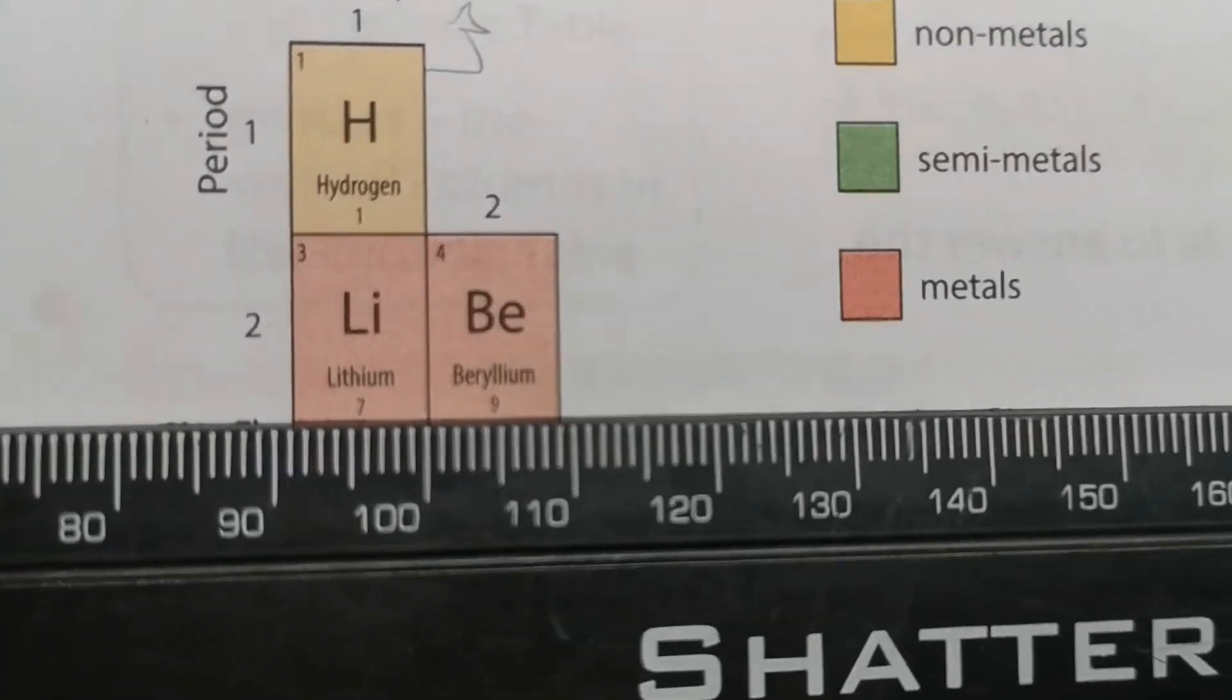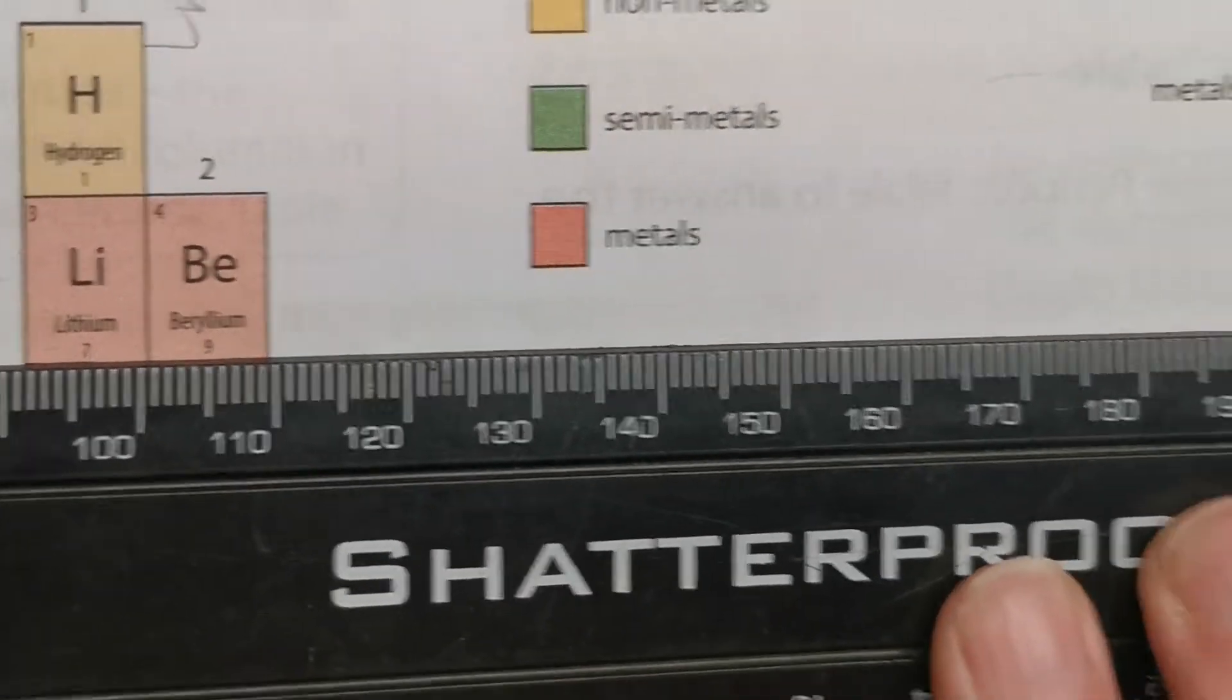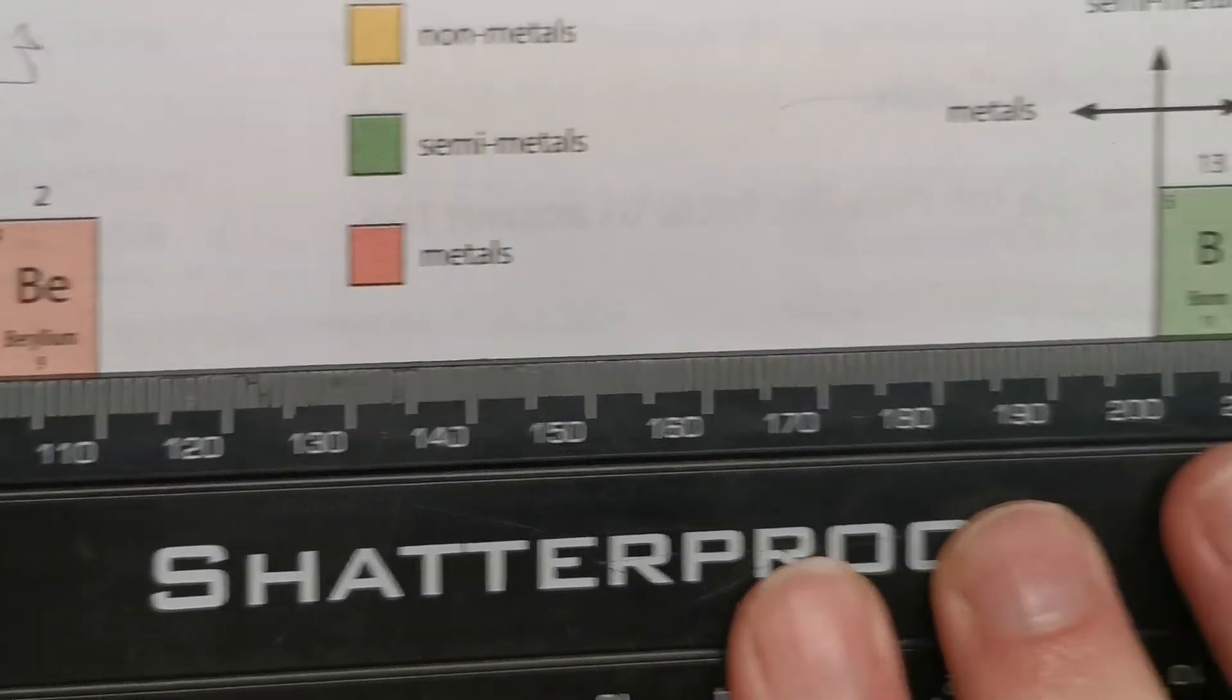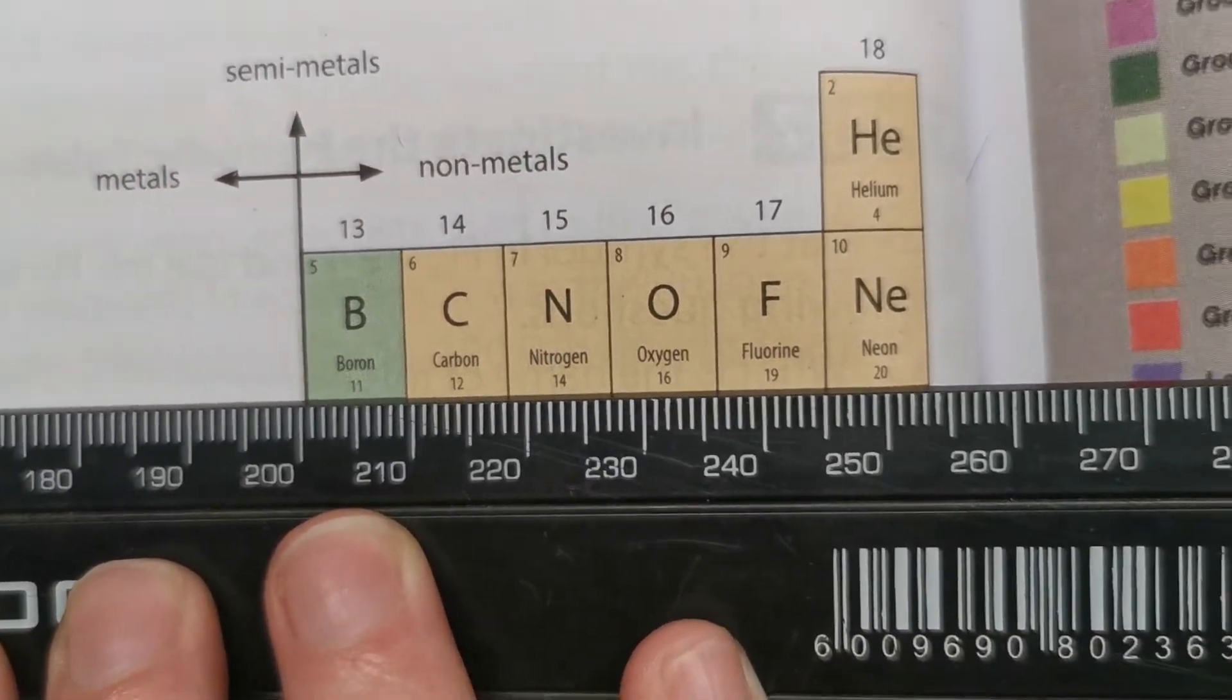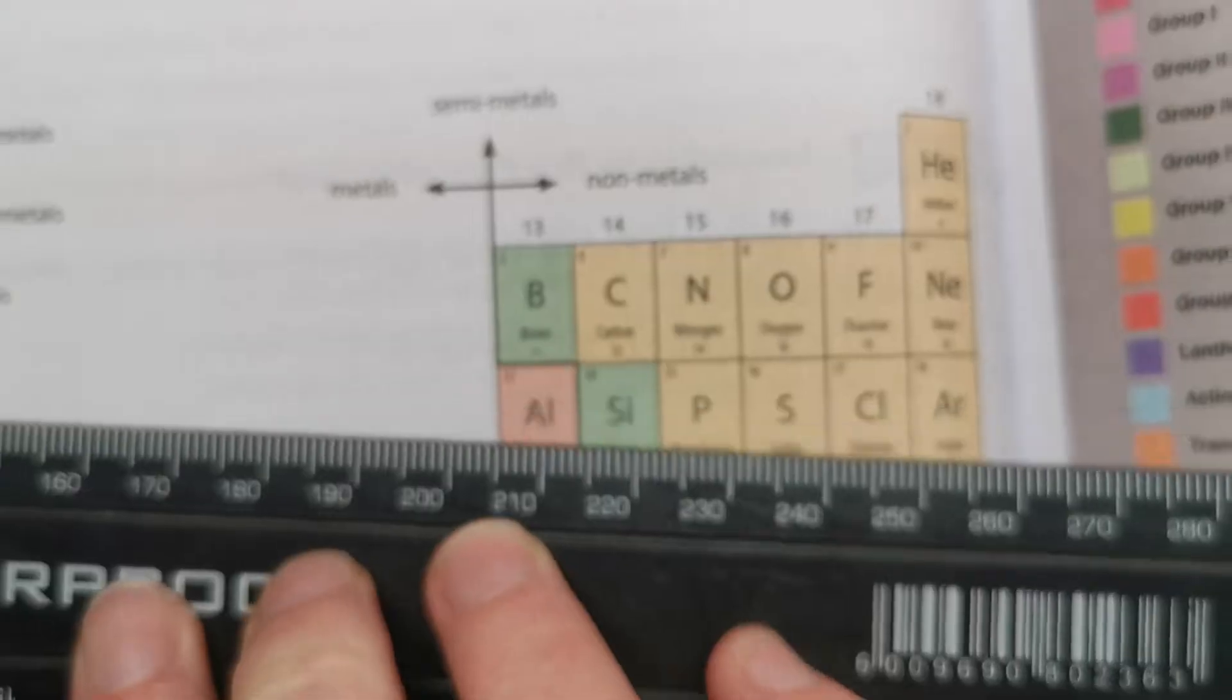Remember period is going across. And you can choose any one of these: lithium, beryllium, boron, carbon, nitrogen, oxygen, fluorine, and neon.